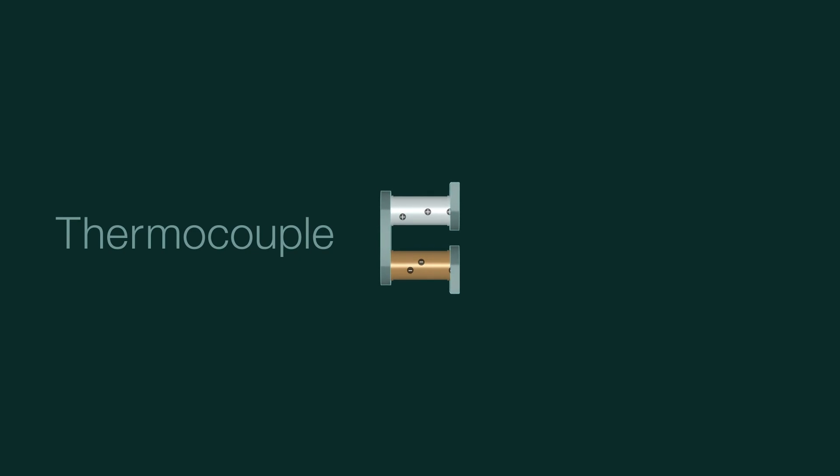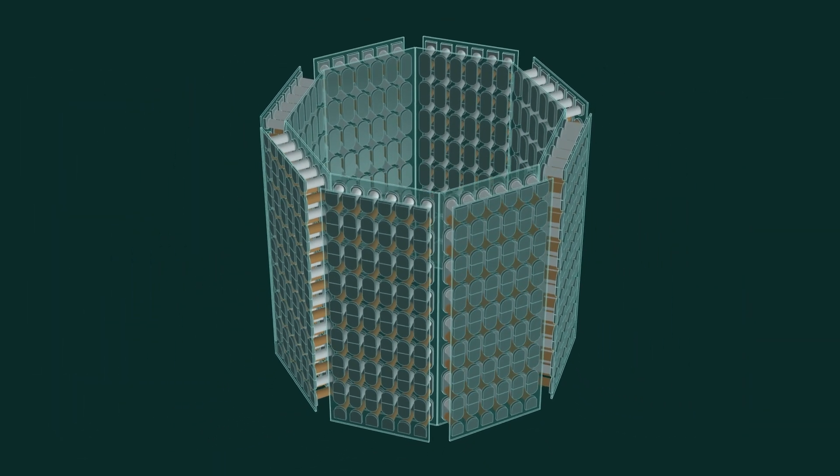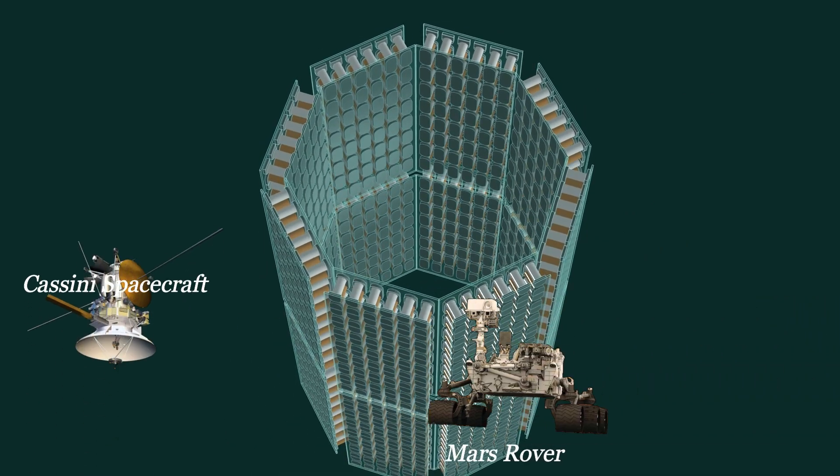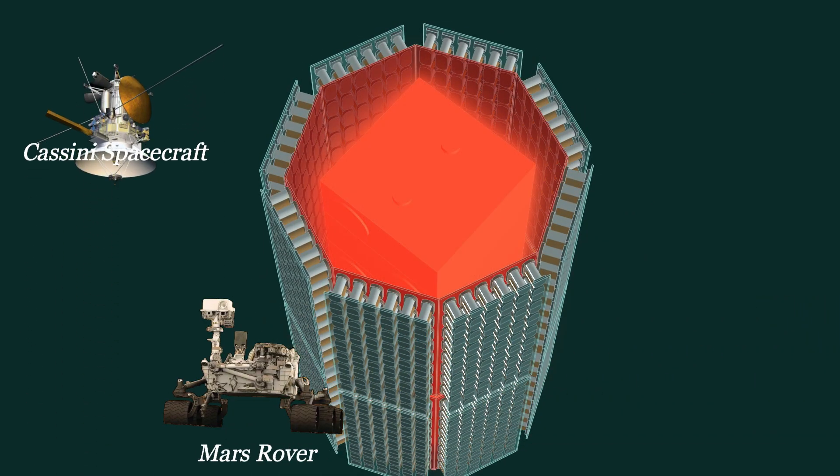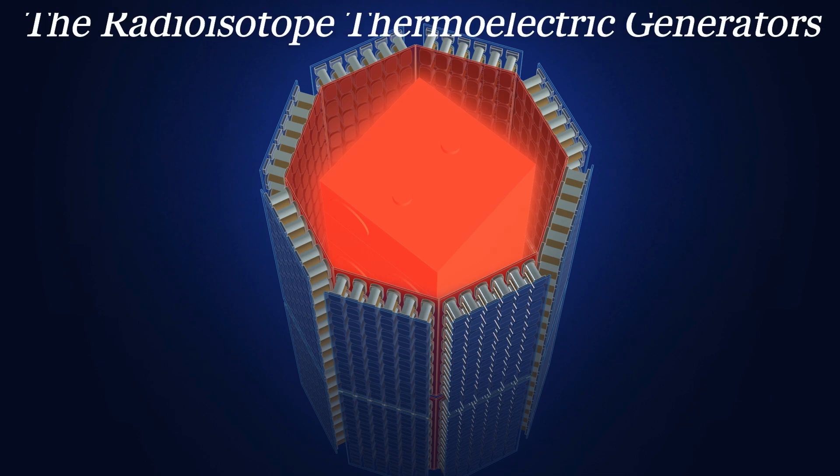Inside a radioisotope thermoelectric generator, or RTG, these thermocouples are strung together in a long series so they can generate a steady current of electricity that can provide robotic spacecraft with the power they need to operate. Some of the specific materials used in RTGs are selected because they can conduct electricity as well as maintain a hot and a cold side.